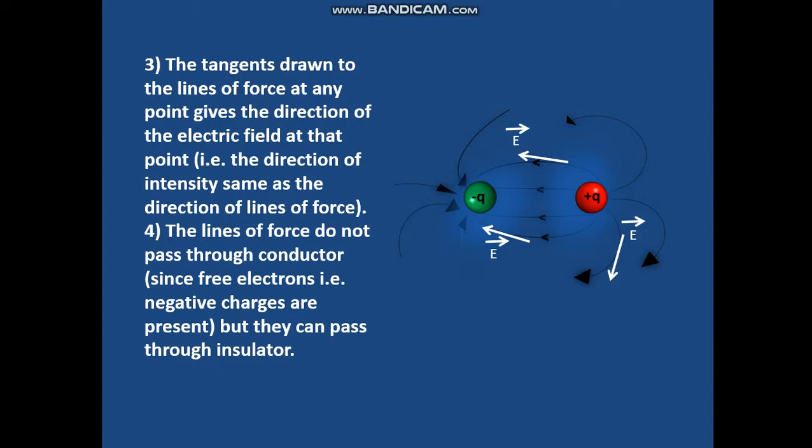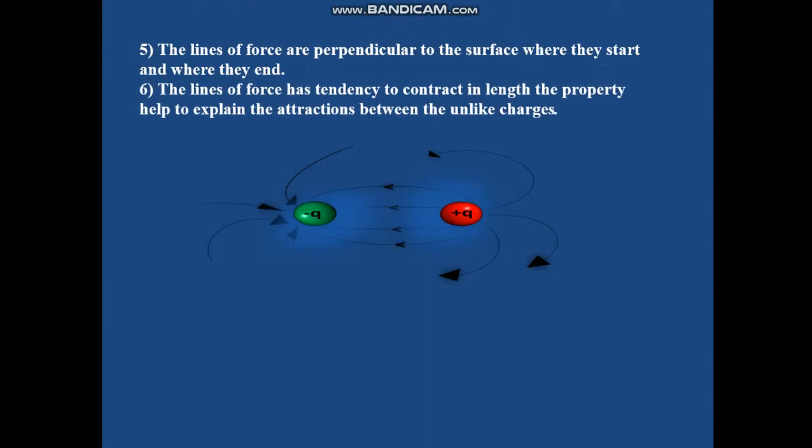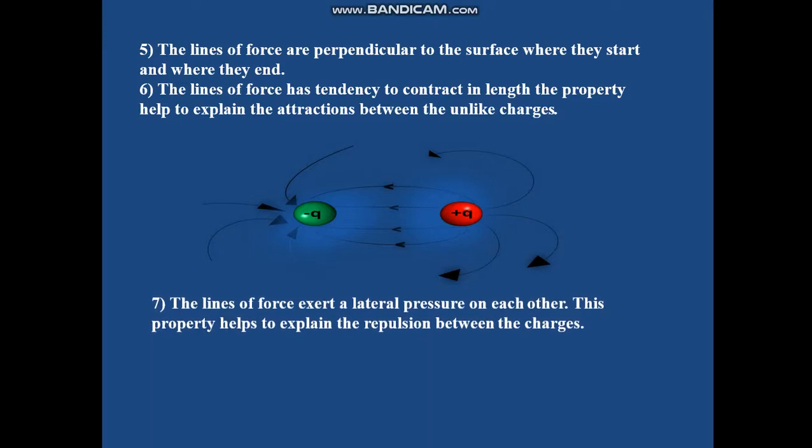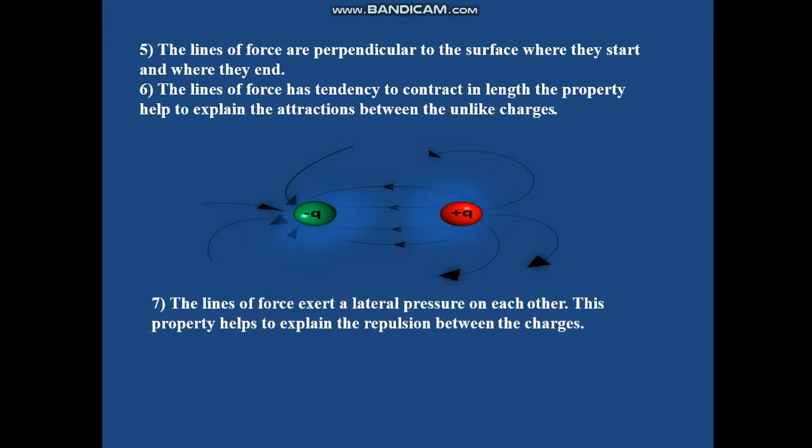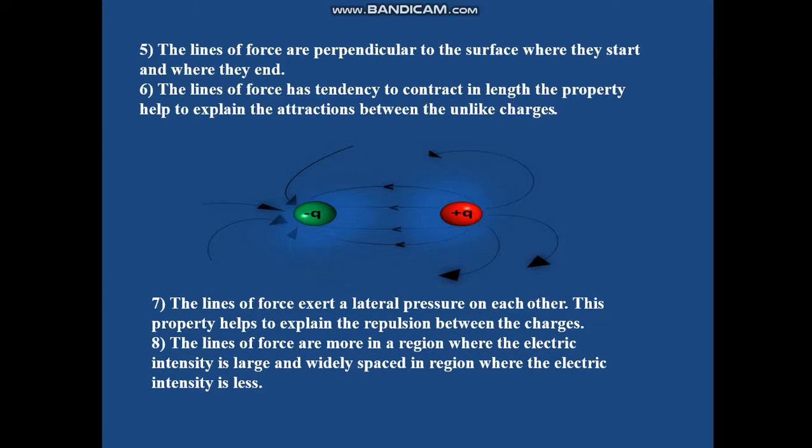The lines of force do not pass through conductors since free electrons, negative charges, are present, but they can pass through insulators. The lines of force are perpendicular at the surface where they start and end. The lines of force have a tendency to contract in length; this property helps explain the attraction between unlike charges. The lines of force exert a lateral pressure on each other; this property helps explain the repulsion between charges. The lines of force are more concentrated in regions where electric intensity is large and widely spaced where electric intensity is less.